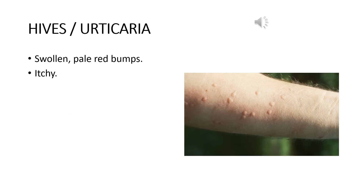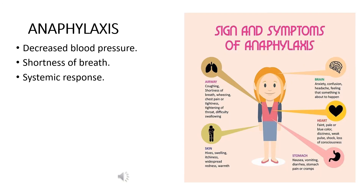The next most common allergic reaction is called hives or urticaria. In hives or urticaria, swollen, pale red bumps are present all over the skin and it becomes very itchy. Up to this point, the allergic reactions we have studied — hay fever, asthma, and hives — were all local reactions, meaning a particular organ or particular system of the human body was getting affected.